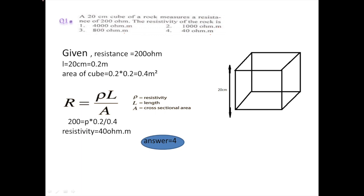If we look at the answer options, every answer is in meters. So we have to convert the length from 20 centimeter to meters, which becomes 0.2 meter. The resistance given is 200 ohm. The area of the cube is L squared, which becomes 0.04 meter square. The formula for resistance is R = ρL/A, where R is resistance, ρ is resistivity, L is length, and A is area of cross section. Putting all the given values into this formula, the resistivity becomes 40 ohm-meter.